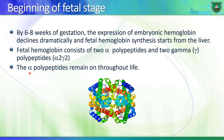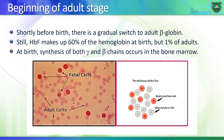The alpha polypeptide predominates throughout life. Throughout the fetal stage, expression of the beta polypeptide increases while gamma polypeptide expression decreases. At birth, about 60% of hemoglobin is fetal hemoglobin (HbF) and 40% is adult hemoglobin (HbA). As we grow, fetal hemoglobin decreases to only about 1% in adults.